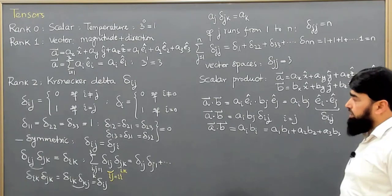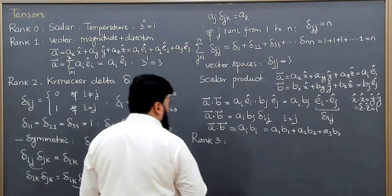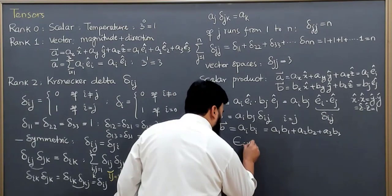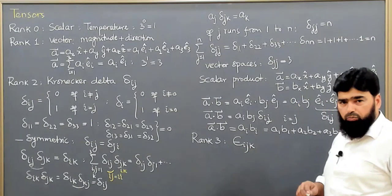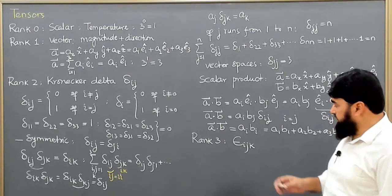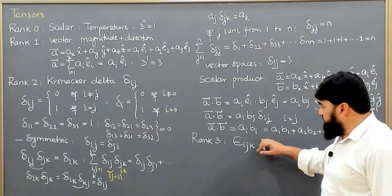Having covered the Kronecker delta as a rank-two tensor, we now move to the rank-three tensor: the Levi-Civita tensor ε_ijk, named after Tullio Levi-Civita from Padua, Italy. Being a rank-three tensor in three dimensions, it has 3^3 = 27 components.